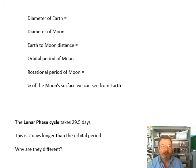Diameter of the Earth - do you know these? If you don't, make an effort to learn them. Diameter of the Moon, distance from the Earth to the Moon, orbital period of the Moon, rotational period of the Moon, the percentage of the Moon's surface we can see from Earth. The lunar phase cycle, which is the time it takes to get from a full moon to a full moon or a new moon to a new moon, is actually two days longer than the orbital period, and we will discuss why that is different in another video.